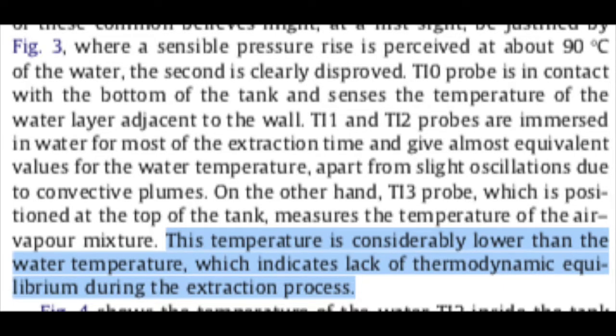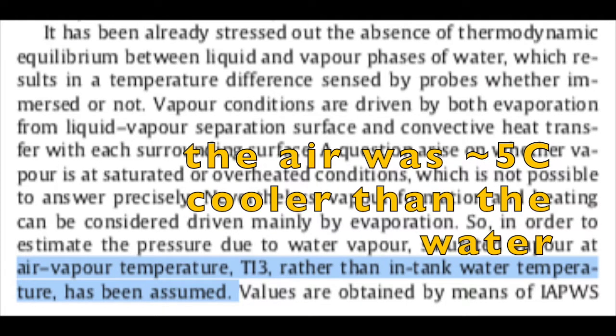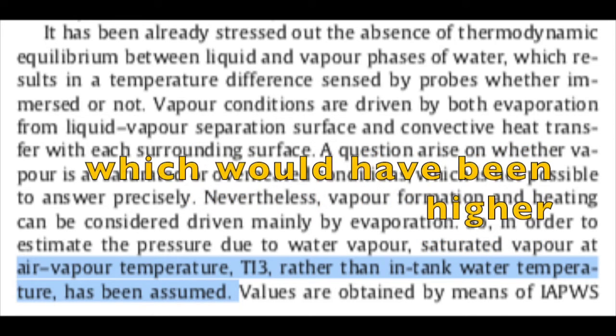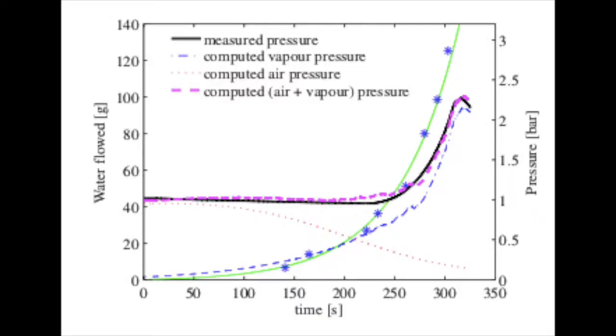What they refused to assume was that the heated water was in thermodynamic and barometric equilibrium with the vapor in the pot, and in fact had measurements to the contrary. This meant they elected to use the saturated vapor pressure at the air temperature rather than the water temperature. The resulting calculation agreed well with their actual pressure measurements and drew conclusions consistent with King's work.